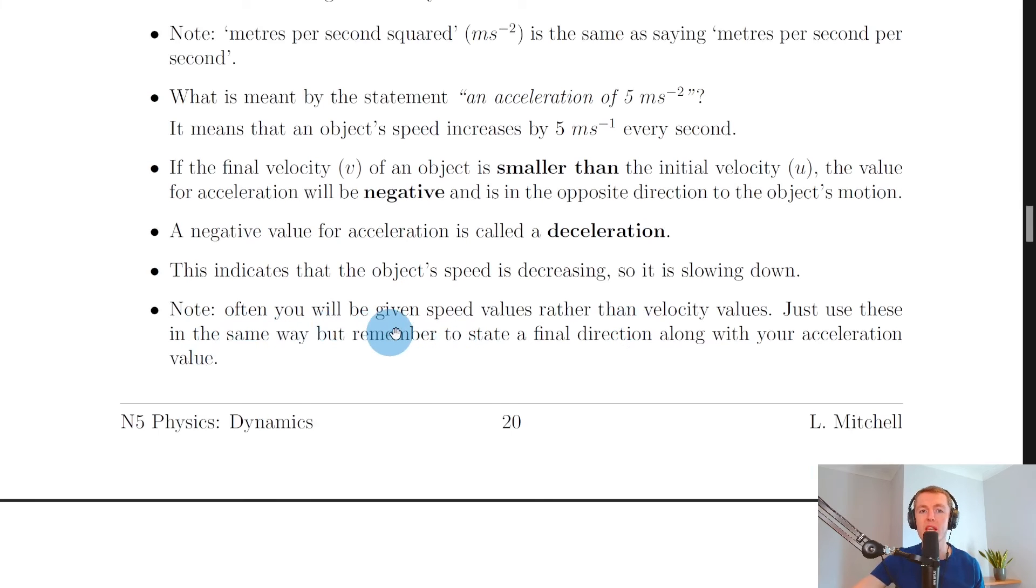And lastly it says to note often you'll be given speed values rather than velocity values. Just use these in the same way but remember to state a final direction along with your acceleration value. And that's because remember acceleration is a vector quantity so we do want to state a direction as well as a magnitude when we're writing it down as an answer.